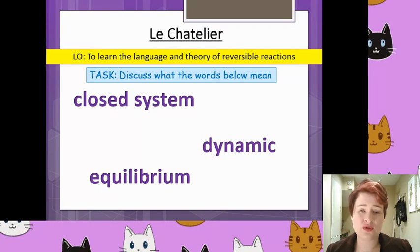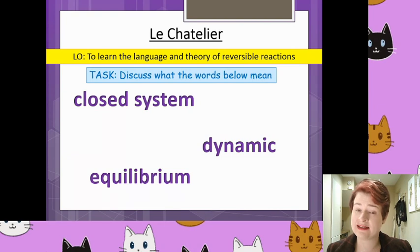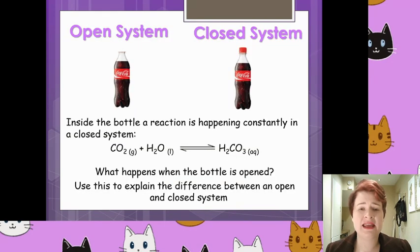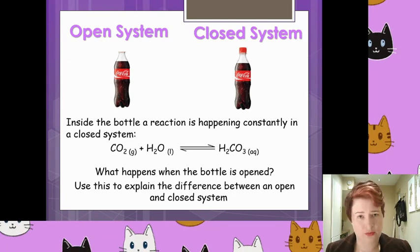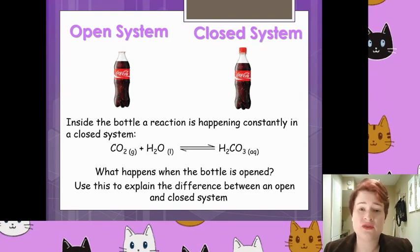So: a closed system, dynamic, and equilibrium. Does anyone know what those words actually mean, or can you potentially give an example? In any chemical reaction you can have a closed system or an open system. A little analogy used in lesson to explain this is an example of a fizzy drinks bottle.